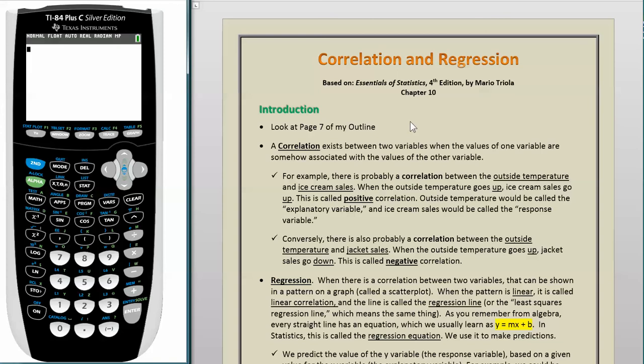A correlation exists between two variables when the values of one variable are somehow associated with the values of the other variable. For example, there is probably a correlation between the outside temperature and ice cream sales. When the outside temperature goes up, ice cream sales go up. This is called positive correlation. Outside temperature would be called the explanatory variable, and ice cream sales would be called the response variable.